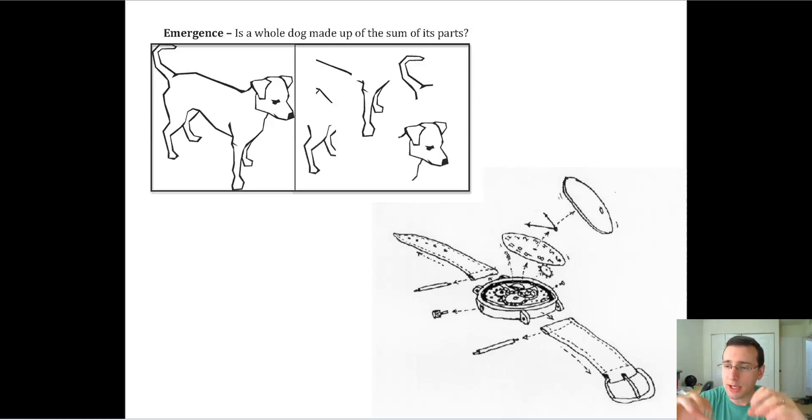So systems biology talks about how to integrate the study of all the constituent parts of a certain system to try to understand how it works. When you're studying that, there's two ways that you can look at things.